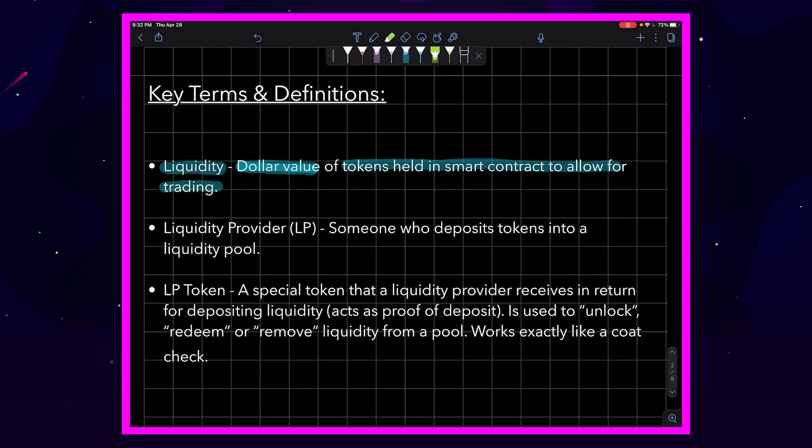Our next definition is liquidity provider. I'm sure you guys can guess what this one is: someone who deposits tokens into a liquidity pool that allows other people to swap those tokens. The last one is an LP token. Now, an LP token is a special token that a liquidity provider receives in return for depositing liquidity.